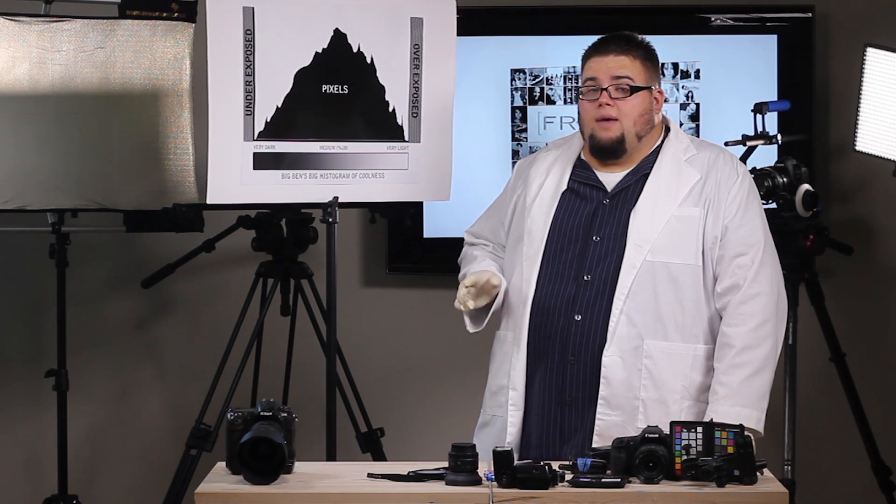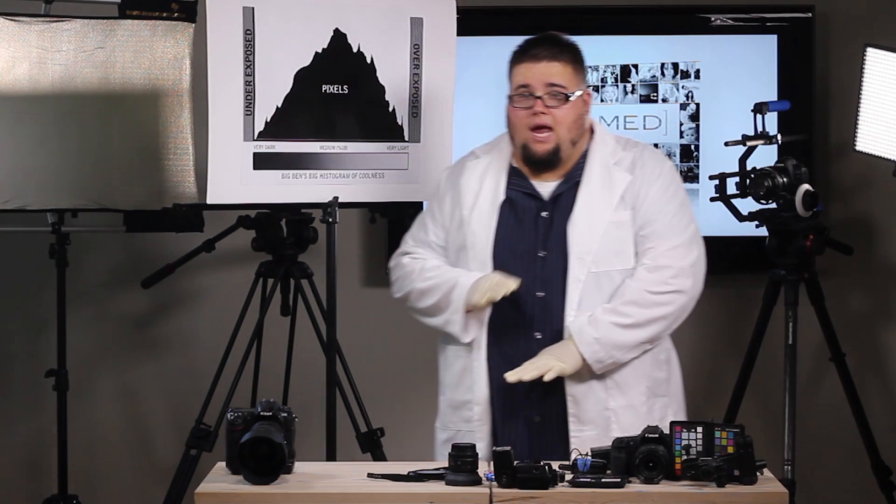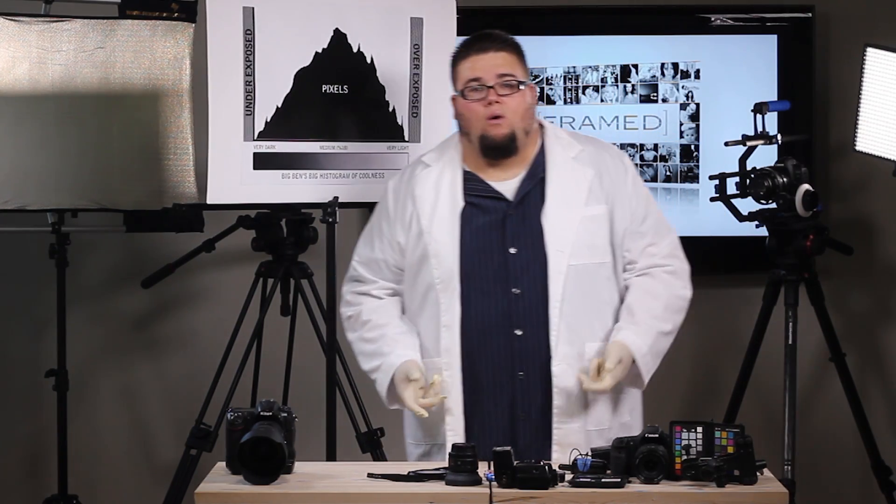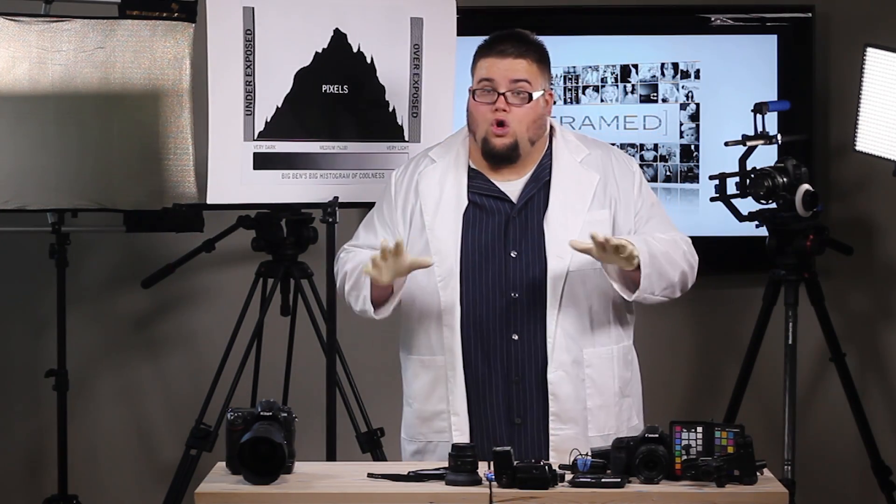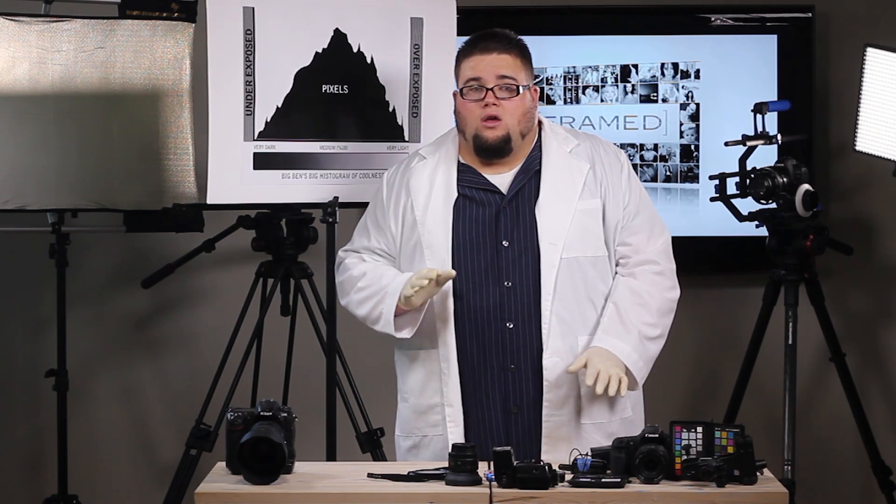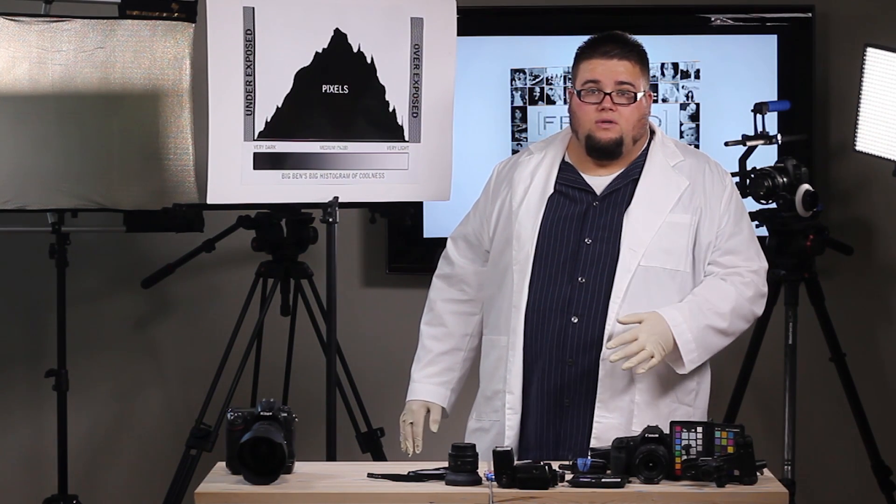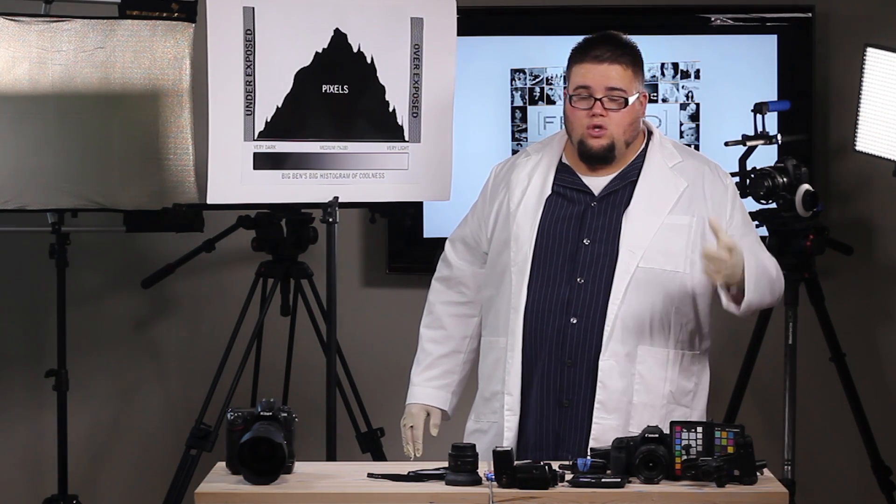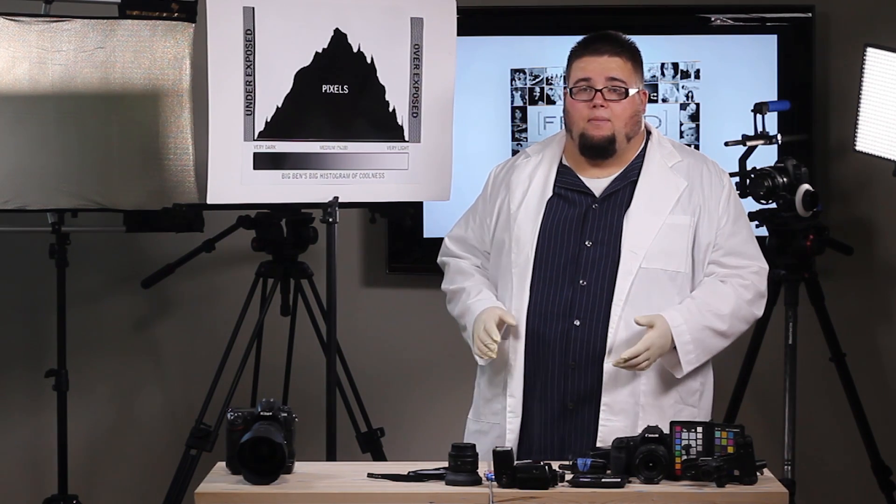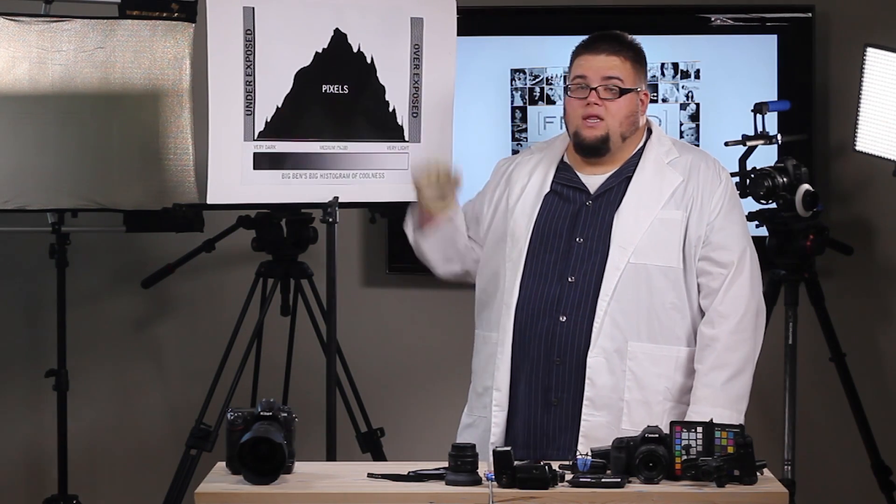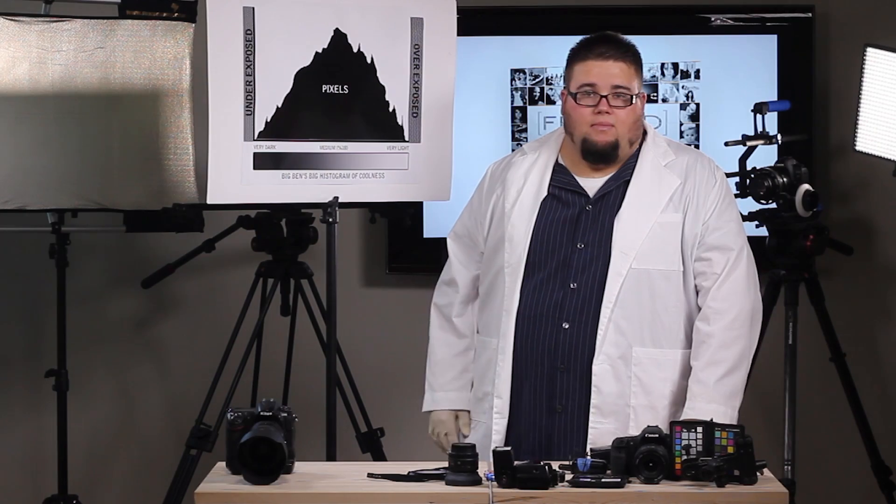If you recall on the earlier episode when we talked about camera sensors and the paper cups and how our camera records information, you'll notice that if we go below this, we are not getting any information into our photo cells of our sensor. There is no information going into that cup. Therefore there's nothing there. It's just going to be black, blobby, muddy mess.